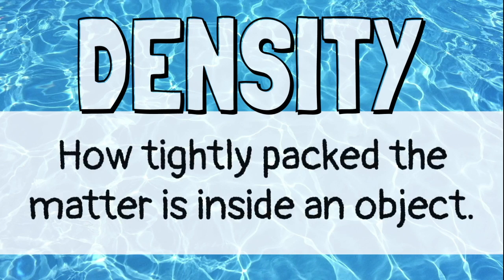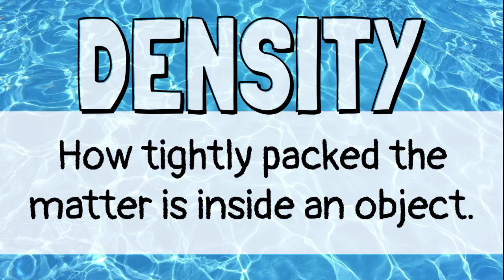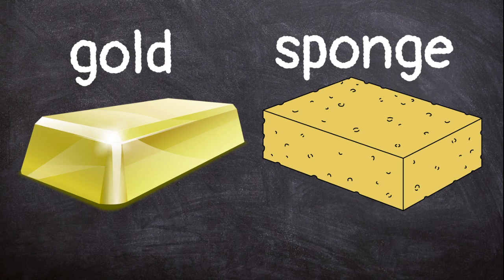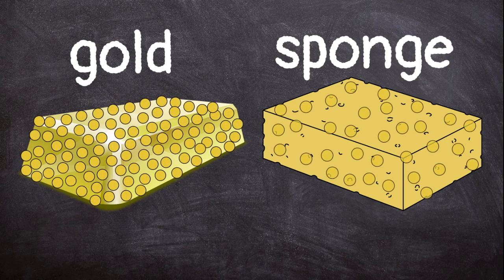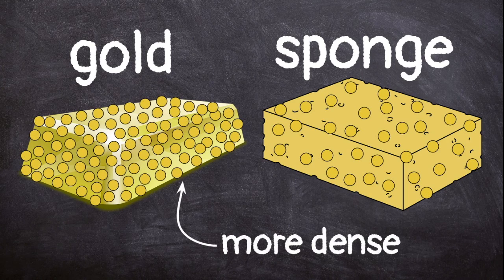Density is how tightly packed the matter is inside an object. Dense objects have more mass per volume than less dense objects. That means there is more matter packed into a smaller space.